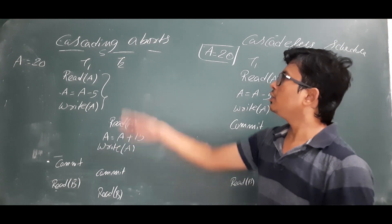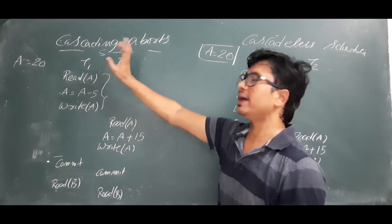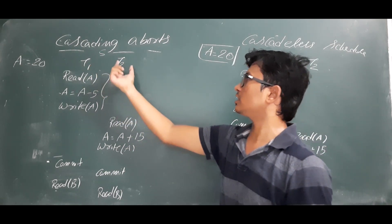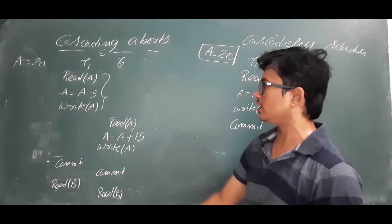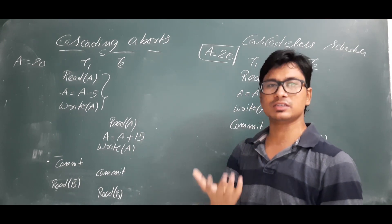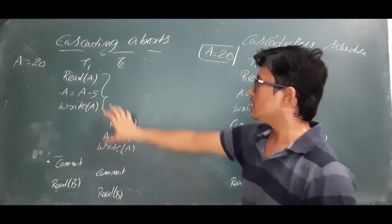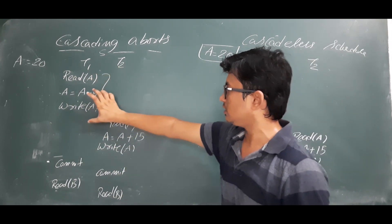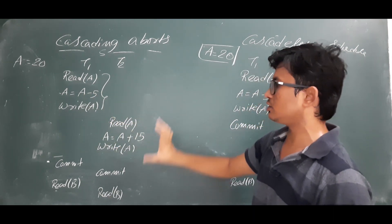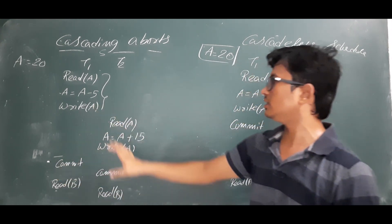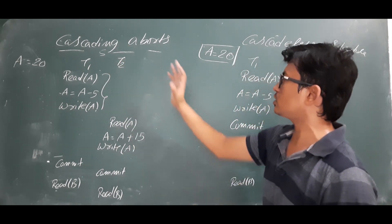Good morning students. Today we will discuss the cascading aborts problem. I have a schedule S which consists of two transactions, transaction one and transaction two. These two transactions are executing concurrently. They have a set of operations interleaved — some operations from transaction one, then transaction two, then interleaved again — so I can say they are executing concurrently.